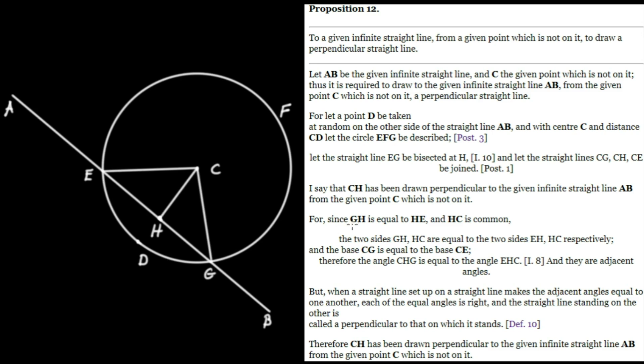For since GH is equal to HE, let's see why that's true. Remember, H bisects EG, which we did through Proposition 10. HC is in common. So we're going to make yet another inference about equal triangles. The two sides GH and HC are equal to the two sides EH and HC, respectively.